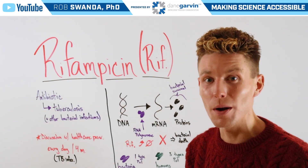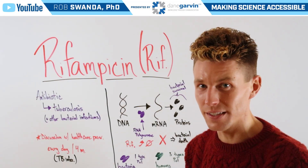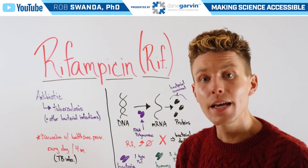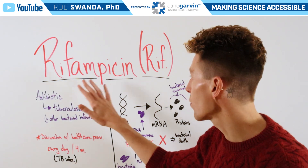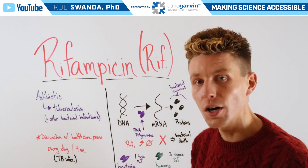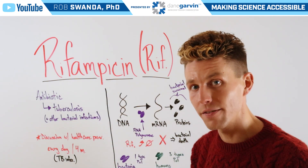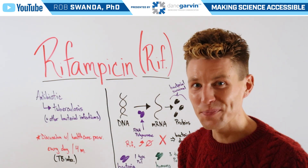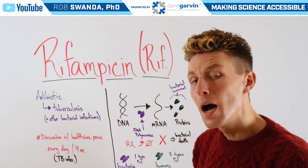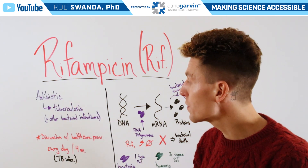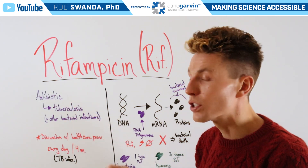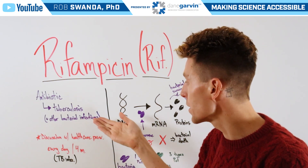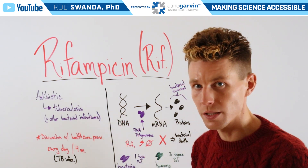As we continue talking more about infectious diseases, a requested molecule for us to break down is known as rifampicin, also abbreviated as RIF. This is an antibiotic primarily used for the treatment of tuberculosis, but it can be used for other bacterial infections as well.